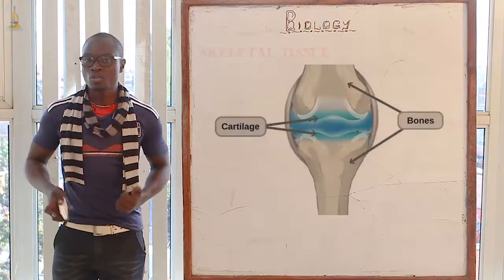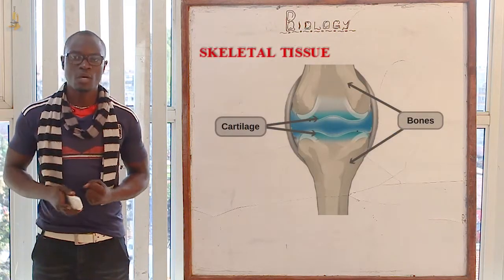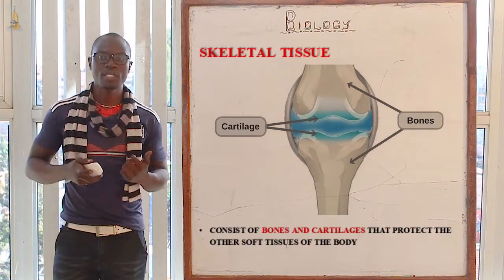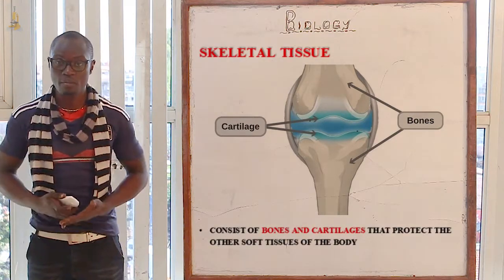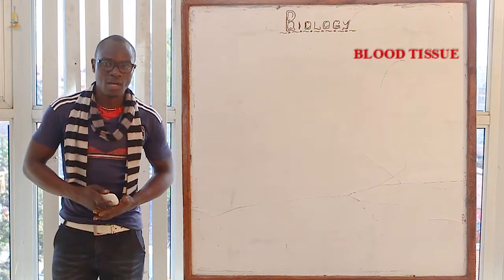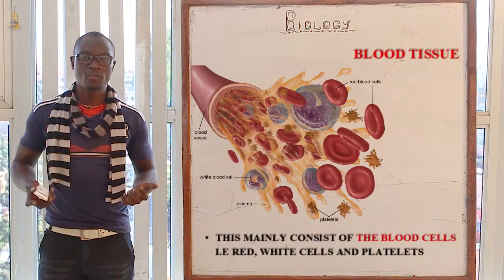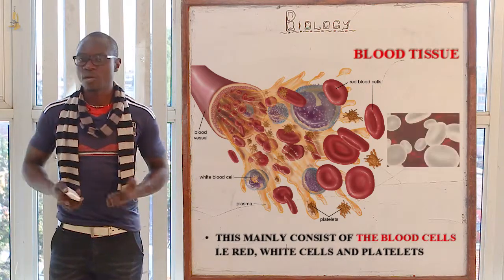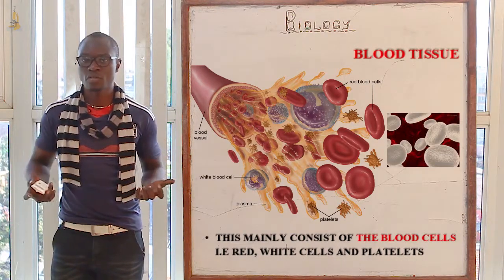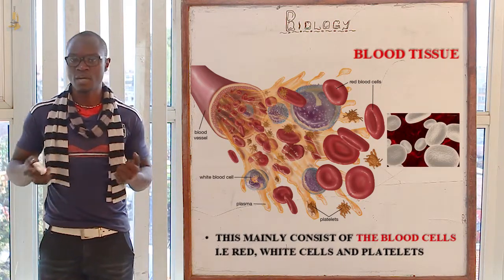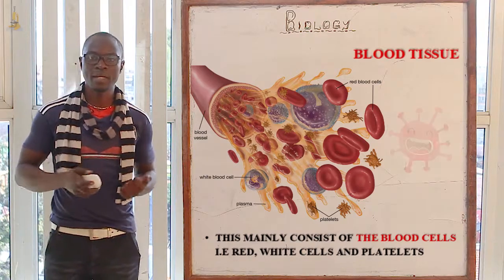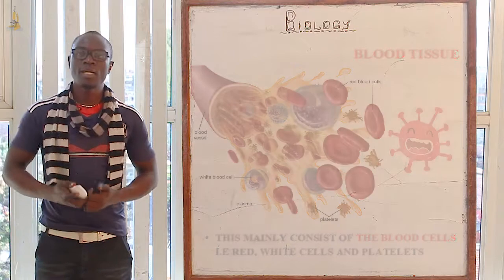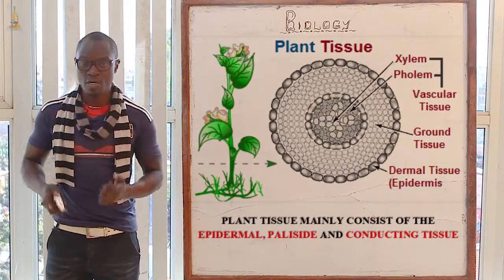The next tissue is the skeletal tissue, which mainly consists of bones and cartilages, protecting the soft tissues of the body. The next one is the blood tissue, which mainly consists of red blood cells that transport dissolved gases, white blood cells whose function is to fight harmful microorganisms, and platelets responsible for the blood clotting process.